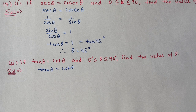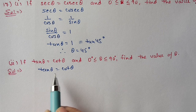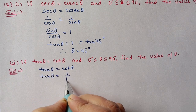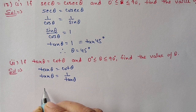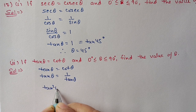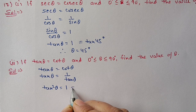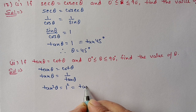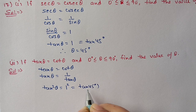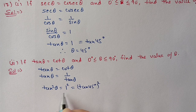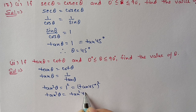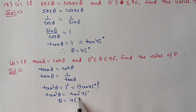Question 17, second part: If tan theta equals cot theta and theta is between 0 and 90, find the value of theta. Cot theta can be written as 1 upon tan theta. Shifting tan theta across gives tan squared theta equals 1. I can write this as tan squared theta equals tan squared 45 degrees. By comparison, theta equals 45 degrees.